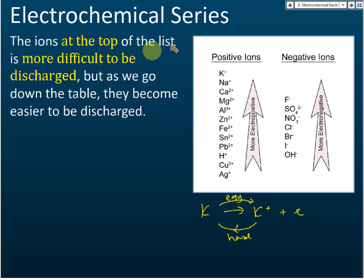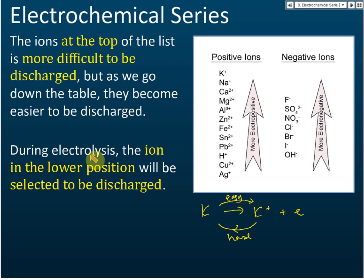Ions at the top of the list are more difficult to be discharged, but as we go down the table they become easier to be discharged. During electrolysis, which is a process of discharging ions, the electrode will select those ions which are easier to be discharged. The higher the ion in the electrochemical series, the harder it is to be discharged; the lower it is, the easier. So during electrolysis, ions in the lower position will be selected to be discharged.